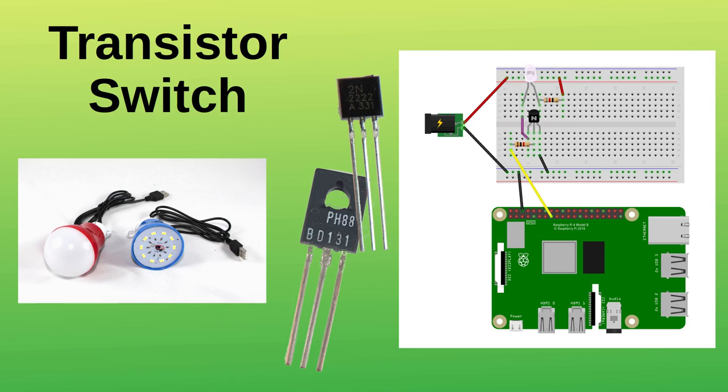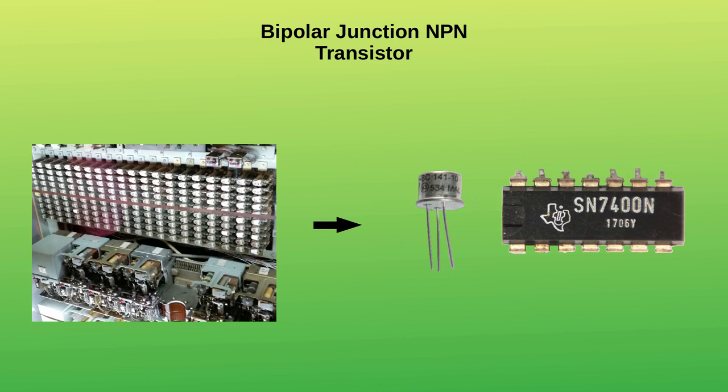The transistor is a semiconductor device. This means that, under certain conditions, it can allow current to flow, acting like a conductor. Otherwise, it will resist the flow of current. The transistor revolutionized the electronics industry, and much of what we now take for granted was made possible through the transistor and developments since.